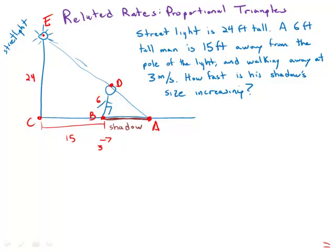And of course triangle ECA is proportional to triangle DBA. And so that means first of all the angles are equal. It also means we can set up proportions of the sides.